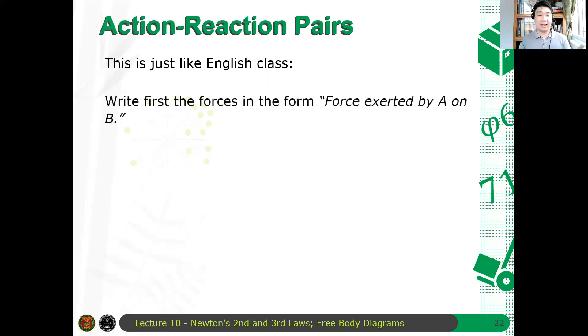For example, in the exam or FQ, right? For example, what are the forces or what are the action-reaction pairs of this object? Which of the following is an action-reaction pair? That's always the question and many make mistakes there. Do this: write first the forces in the form force exerted by A on B. As a sentence. Write force exerted by A on B. Sometimes it's not obvious.